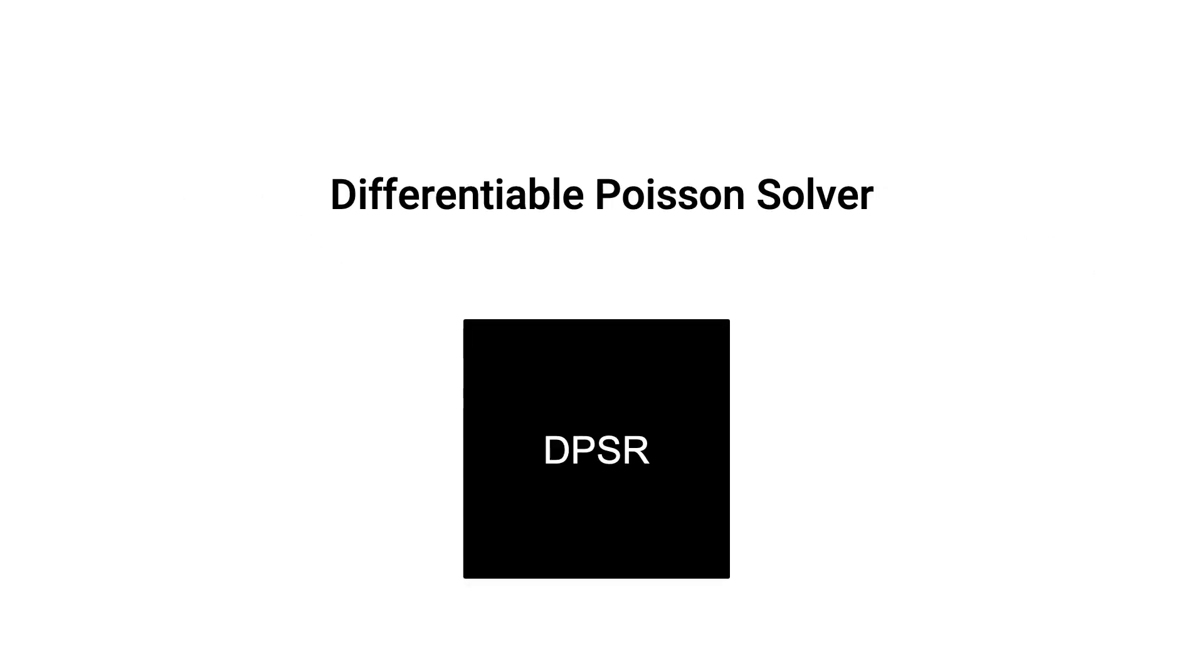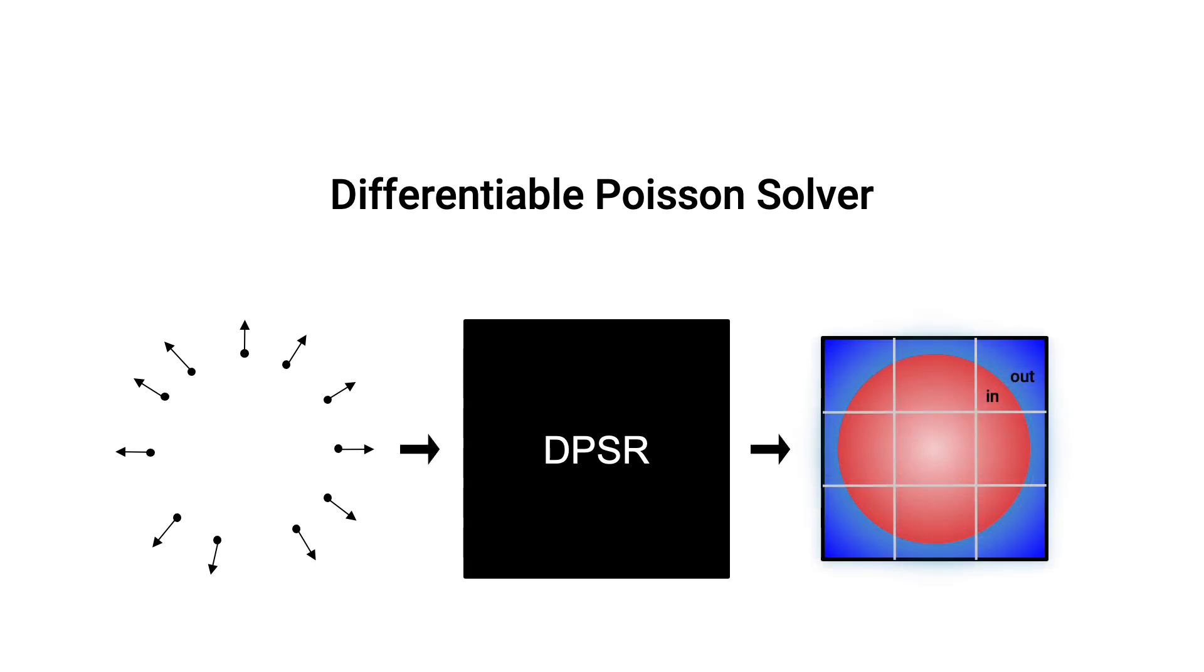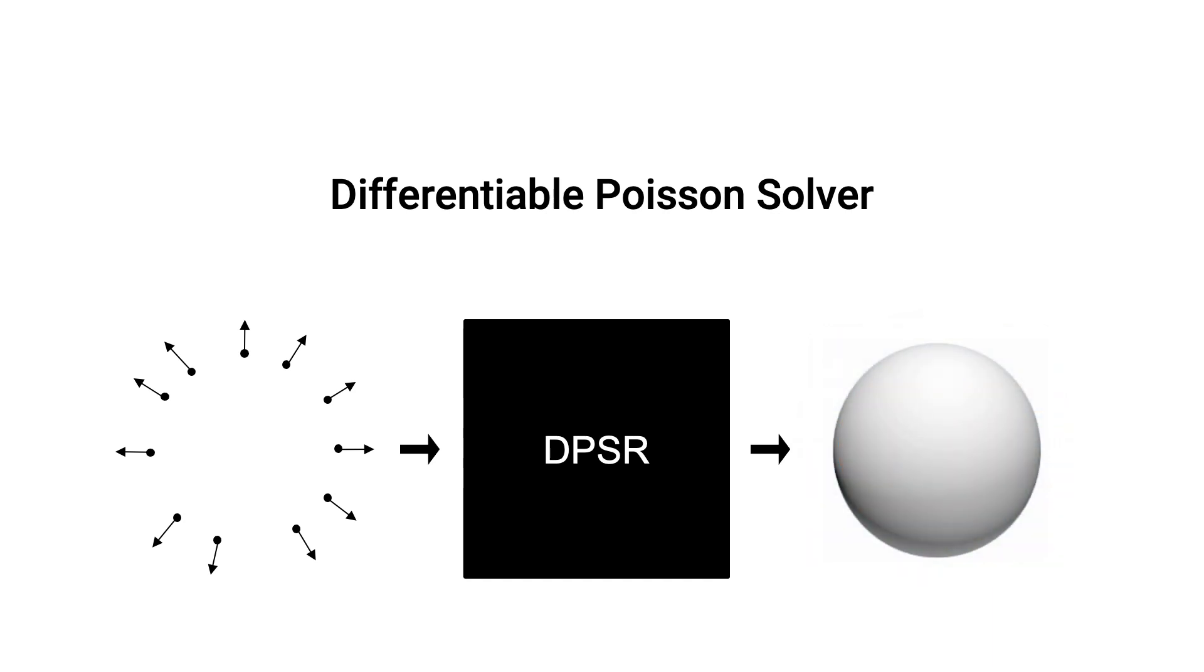The core of our SAP representation is a versatile and differentiable Poisson solver. We call it DPSR. Given some oriented point clouds, our Poisson solver can output a dense regular grid, indicating whether a point is inside the underlying shape or not. We can then easily run marching cubes on the indicator grid to obtain a mesh.